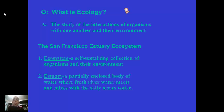In this unit we're going to specifically be looking at the San Francisco estuary ecosystem, so the ecology that we're going to be studying is quite literally your backyard. An ecosystem is a self-sustaining collection of organisms and their environment. An estuary is a partially enclosed body of water where fresh river water meets and mixes with salty ocean water. This is exactly what San Francisco Bay is — fresh water from the Sacramento Delta flows through the rivers and meets with salty ocean water in the San Francisco Bay.